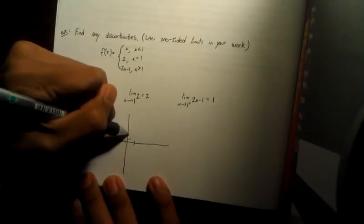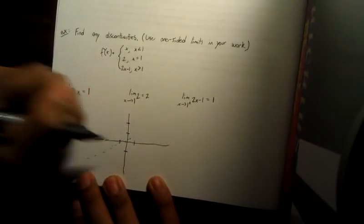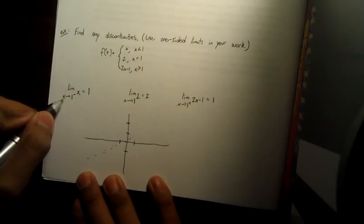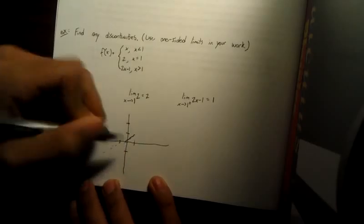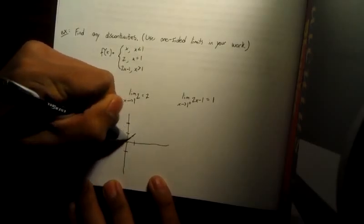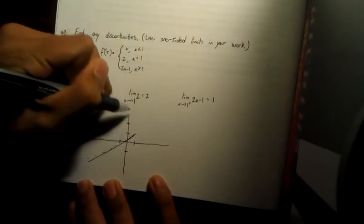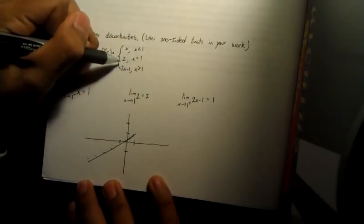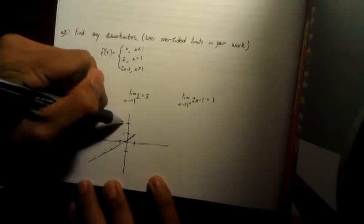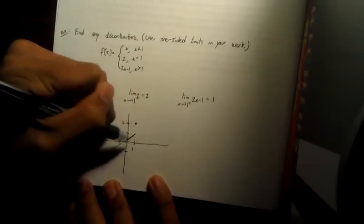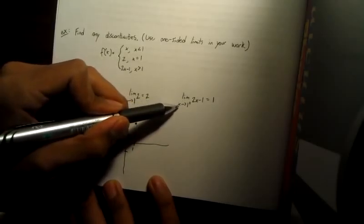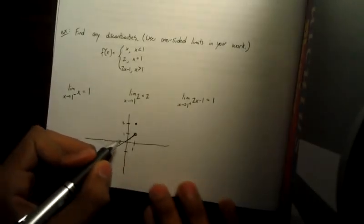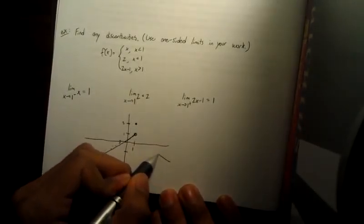A graph will probably help clarify this. As x approaches one from the negative, it's approaching the y-value of one, so the graph looks something like this. However, at x equals one, the defined value is two. And as x approaches one from the positive side, that value is going to be one.